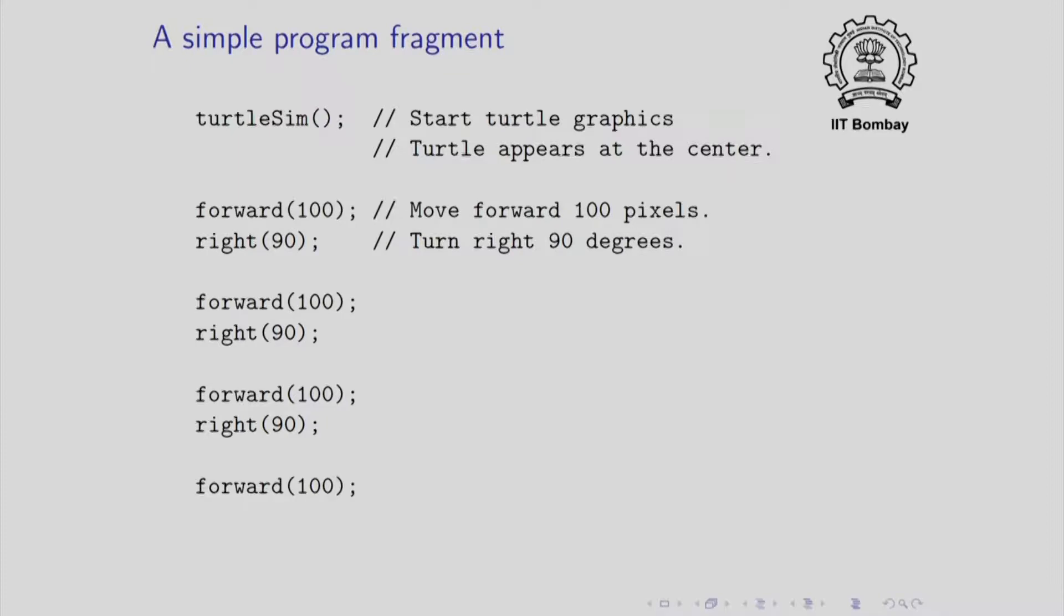So we do forward hundred then a right 90. Another forward hundred and a right 90. Another forward hundred, a right 90 and a forward hundred. Can you guess what this draws? The simplest way to guess is to pretend that you are the turtle and maybe walk forward or turn as you execute the commands. If you guess correctly and I am sure you will, you will observe that this is going to be a square.